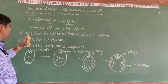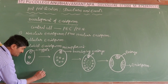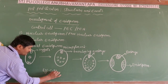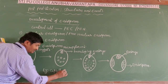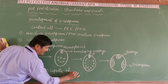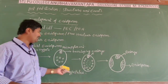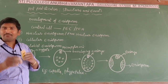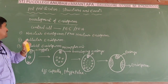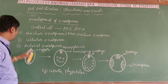The best examples for nuclear (free nuclear) endosperm are Capsella and Polypetalae. Polypetalae is a subclass of dicotyledons. These are the best examples for nuclear or free nuclear endosperm.